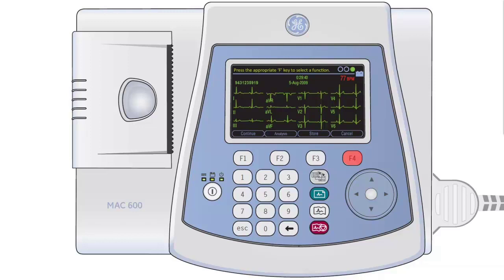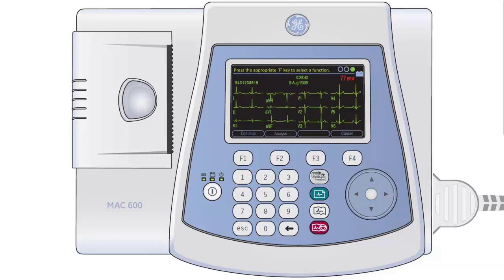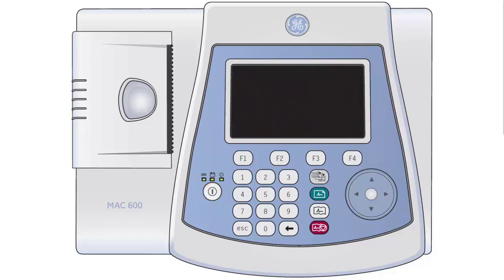If you are happy with the ECG you have captured, press the F3 button to store the ECG. The stored ECG can be printed if required by pressing the F1 button. The patient can be disconnected now from the machine. Switch off the ECG machine by pressing and holding down the power button for 5 seconds until the display goes blank.